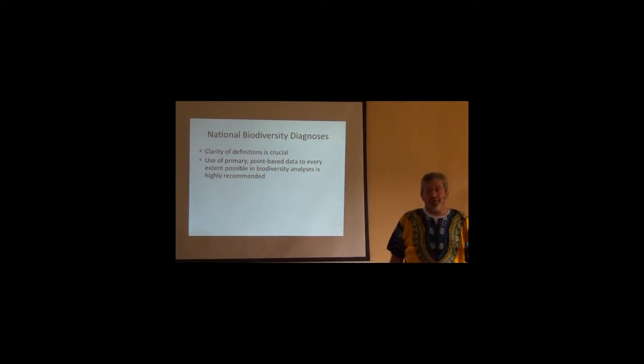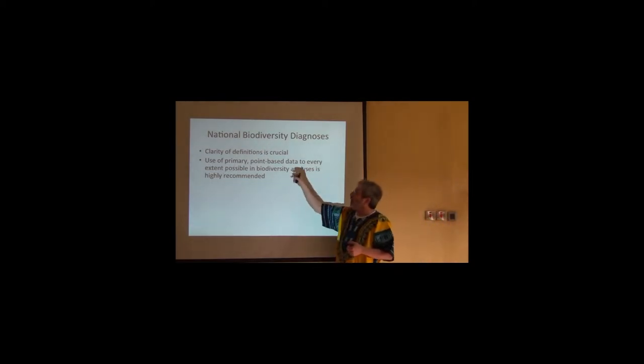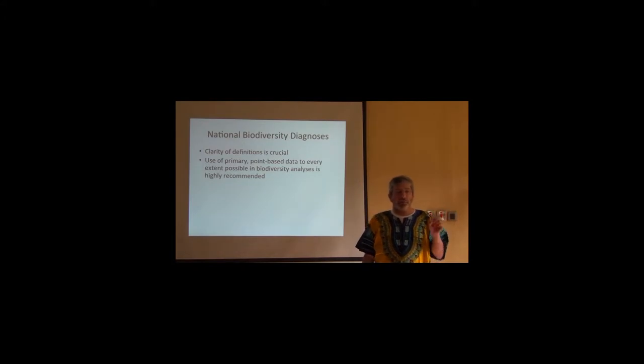If we use primary point-based biodiversity data in our biodiversity analyses, it has a world of advantages. Points in theory have no area, so we can use a data set of points at very fine levels, at medium levels, and at global levels. There's a lower limit set by the spatial resolution and uncertainty of those points, but the point data are relevant at every scale and resolution coarser than their uncertainty.